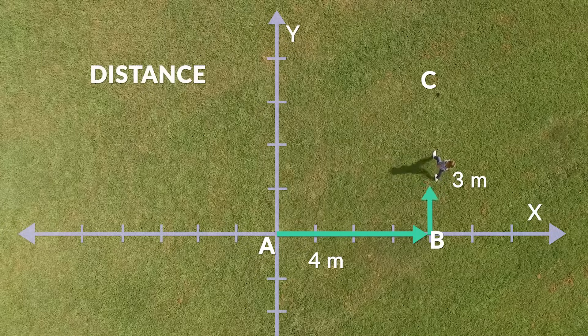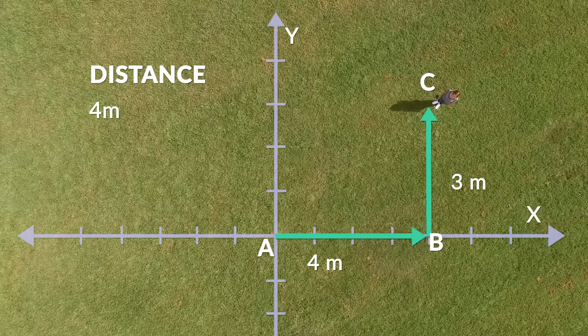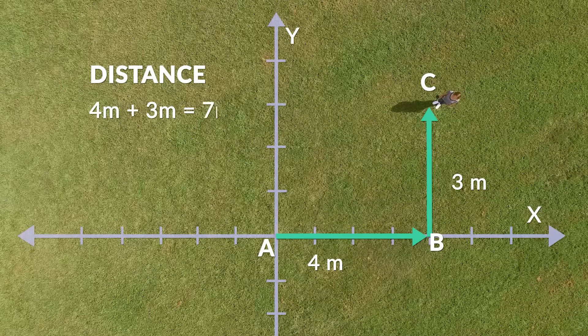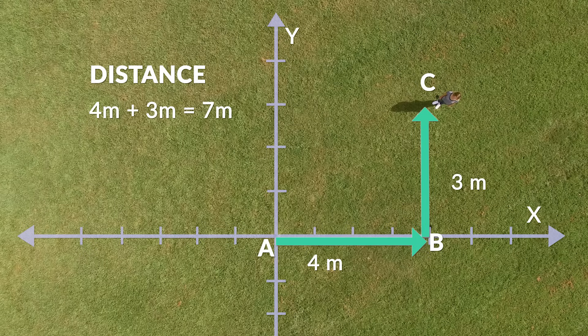The total distance I traveled since I left point A is four meters plus three meters, which is a total of seven meters to get to point C. With distance, we only need to know the route that we took to go from our origin to our destination.